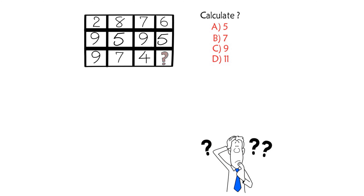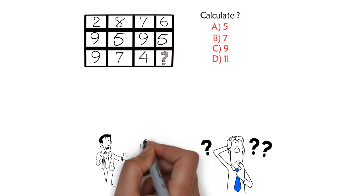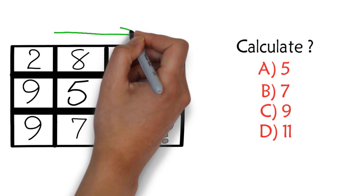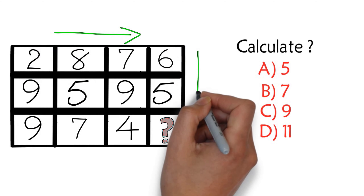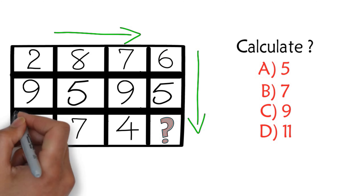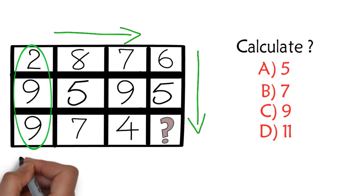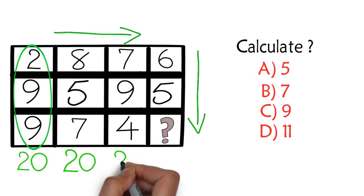Give yourself five to ten seconds — this is about as much time as you will get on the test. The key to solving this problem is to determine the pattern, which can be in the rows or in the columns. In this particular case, let's check the columns first. Each column adds up to the value of 20. For example, two plus nine plus nine is twenty, eight plus five plus seven is twenty, and seven plus nine plus four is twenty as well.